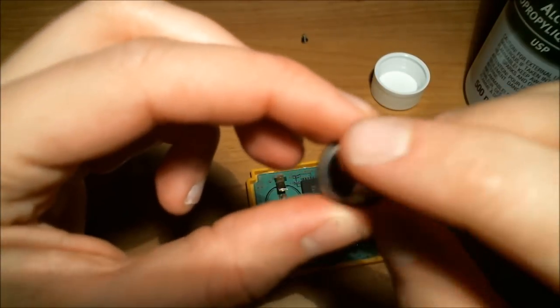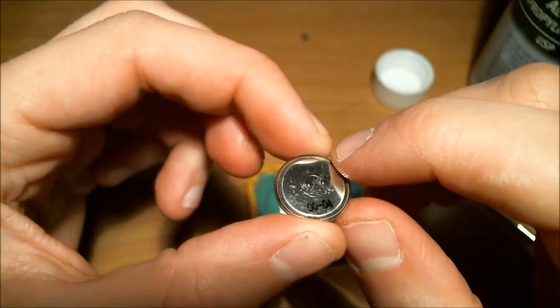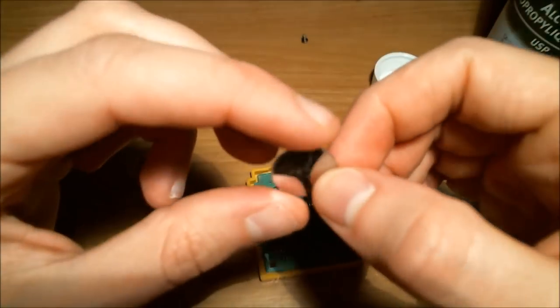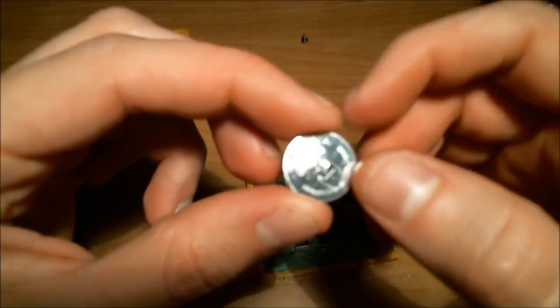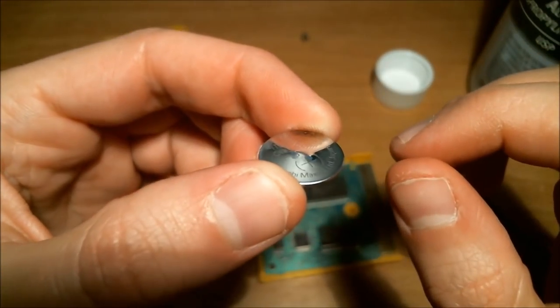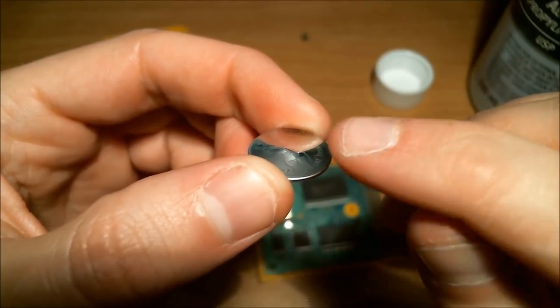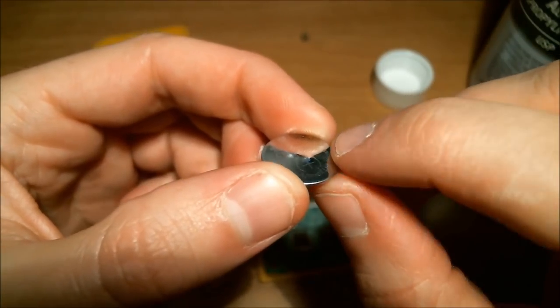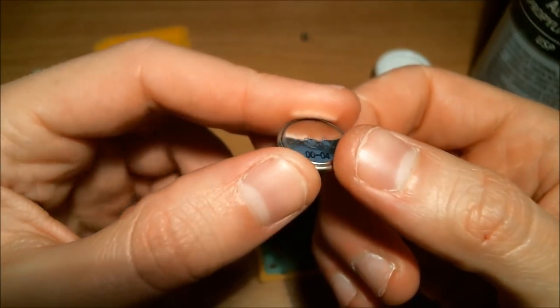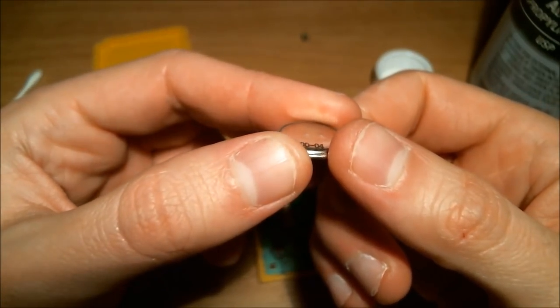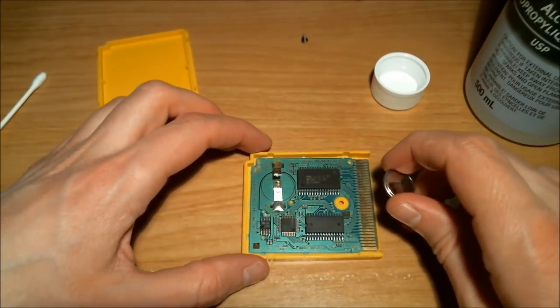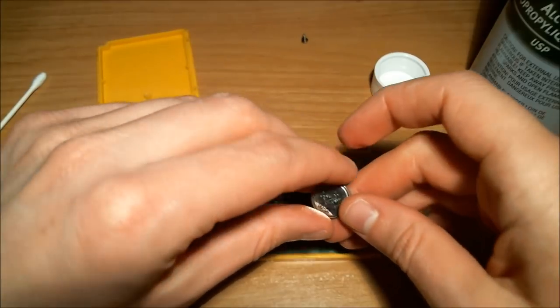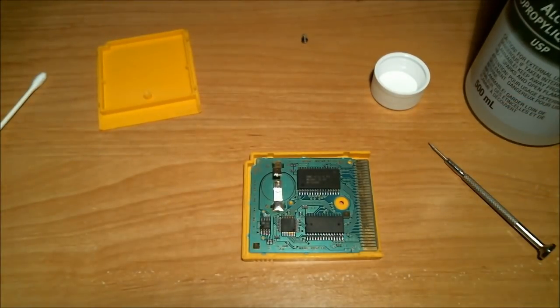Great. It looks like the tab on the bottom is still intact as well. Here's our little battery. So it looks like, it's hard to tell, but the plus side, you can see it there, was facing down. The negative side was facing up. That's important to make note of because we've got to put the new battery in the same way.